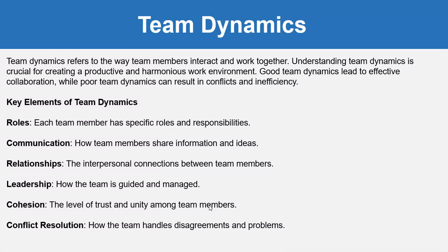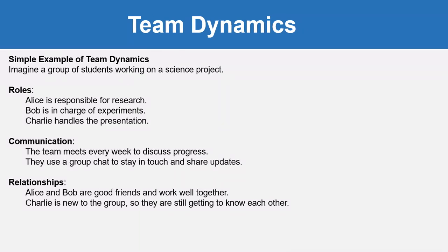The key elements of team dynamics are: first, roles — each team member has a specific role and responsibility; communication — how team members share information and ideas; relationships — the interpersonal connections between team members; leadership — how the team is guided and managed; cohesion — the level of trust and unity among team members; and conflict resolution — how the team handles disagreements and problems.